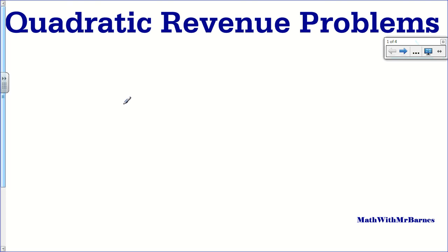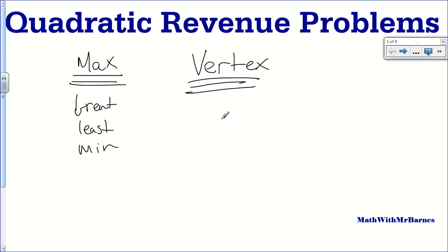Alright, so quadratic revenue problems. First thing that you need to recognize when you're doing one of these questions is does it ask for max. So if it says max, greatest, least, minimum, that basically gives you a hint that you're looking for the vertex. So with every single quadratic question, you're always in a battle of do I find the vertex or do I find the x-intercept. So if it says max, greatest, least, minimum, things like that, you want to find the vertex. The best way to find the vertex is using the axis of symmetry formula: x equals negative b over 2a. That is by far the best way to find it.